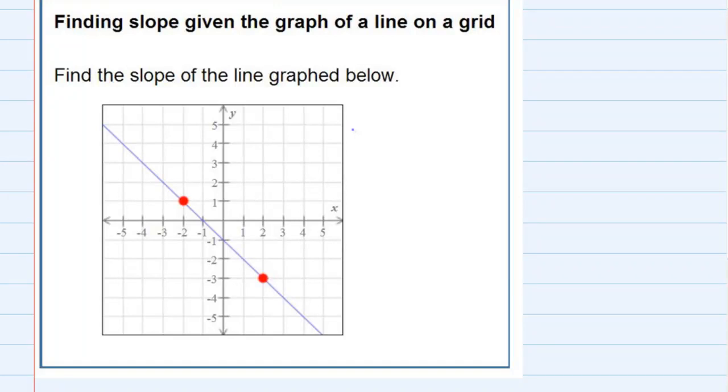Finding slope given the graph of a line on a grid. We're given our graph and we're asked to find the slope, so we need to remember that the slope is the rise over the run.